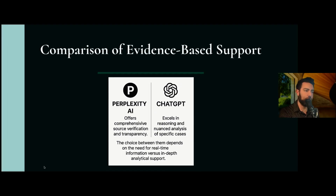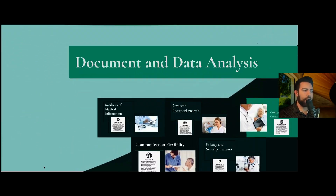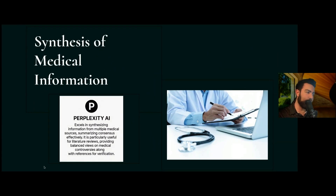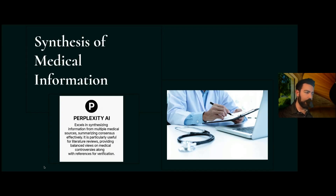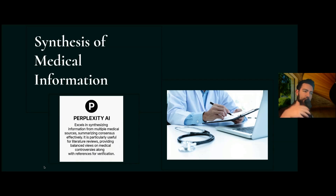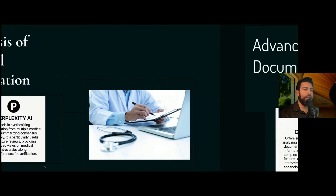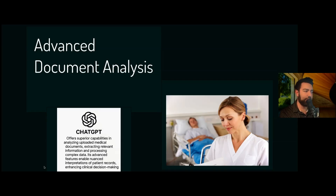Get source verification, transparency, and the latest data from Perplexity AI; have your patient analyzed and decision-making augmented using ChatGPT. For documents and data analysis, Perplexity is really good at synthesizing information from multiple medical sources. If you're doing a literature review with 20 or 30 sources that you need to summarize, get a balanced view of medical controversies, and have all references consistently and transparently cited — go to Perplexity.